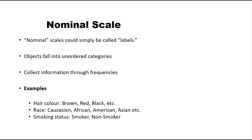The first one is nominal scale. Nominal, as its name suggests, is just a name — just a label, like your name or my name. They are just names by which we are called, but they don't have any order or any quantification; they are just labeling. So nominal means we have only labels without any order. For example, hair color — brown, red, black — there is no order; they are just names of colors. So hair color is an example of nominal scale.